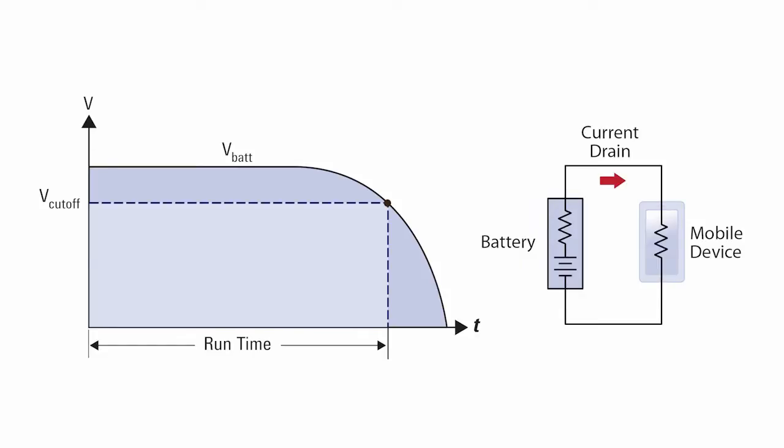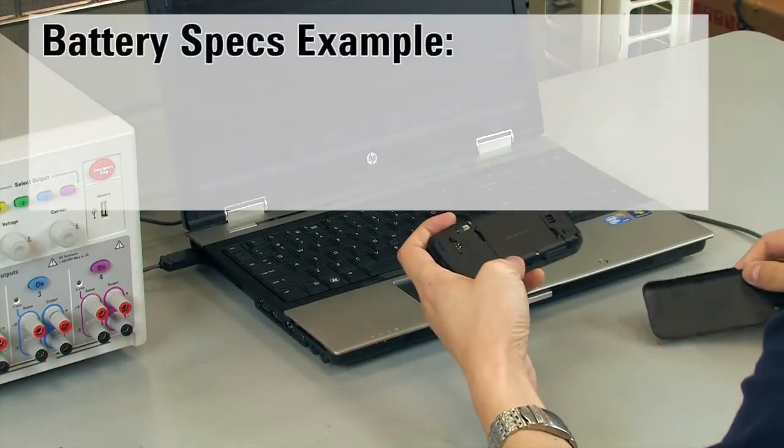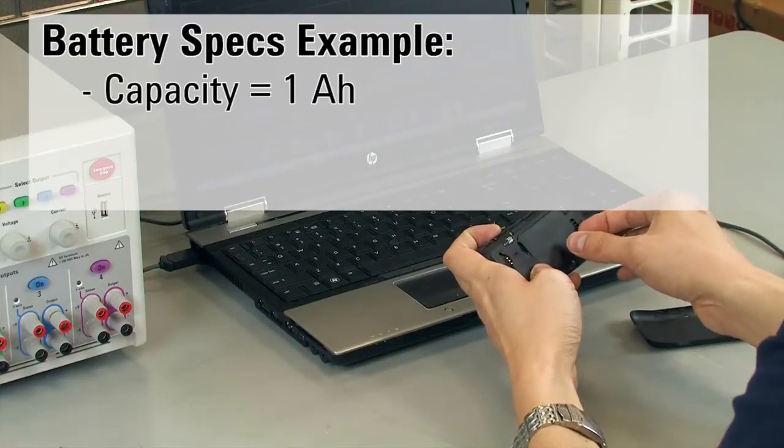Battery capacity is the amount of charge in amp hours or milliamp hours that the battery is specified to hold. This is different from the battery's energy rating, which is measured or expressed in watt hours. You can determine the energy rating by taking the product of the battery's capacity times its stated nominal voltage.